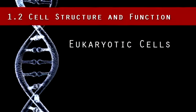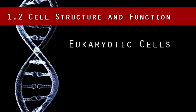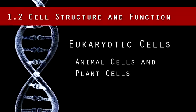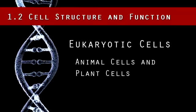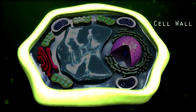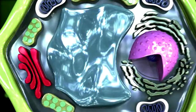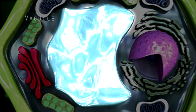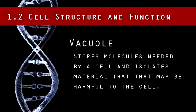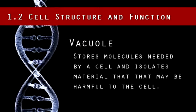There are actually two types of eukaryotic cells: animal cells and plant cells. Both types of cells are very similar, but there are three distinct differences. First, plant cells have a cell wall surrounding the plasma cell membrane, whereas animal cells just have a cell membrane. Secondly, there is often just one large central vacuole found in plant cells, whereas animal cells have a few small ones. The vacuole stores molecules needed by a cell and also isolates material that may be harmful to the cell.